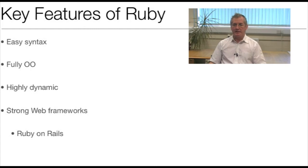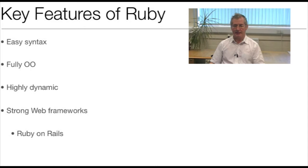Ruby is highly dynamic, it's an interpreted language, it's still quite efficient. The perhaps classic example of a Ruby on Rails application which is Twitter demonstrates it is scalable and it is efficient as a language. But it is highly dynamic — you can work interactively with it.